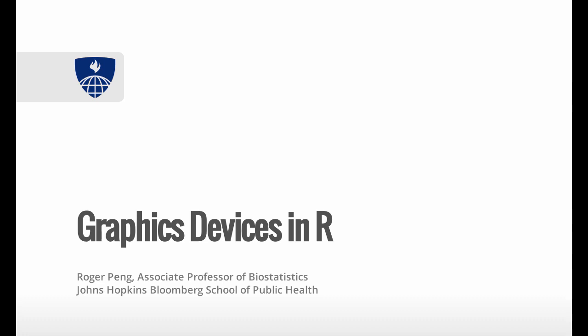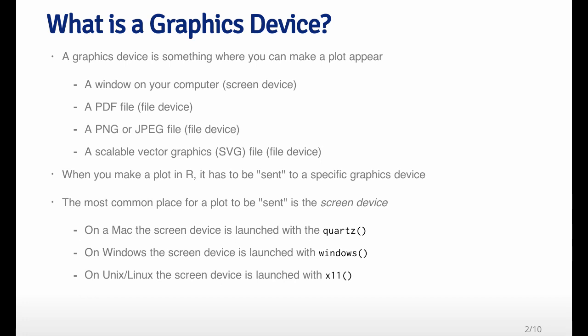Graphics devices in R are very important because we need them to make plots. There are many different types of graphics devices on which we can make plots, and so this lecture is going to cover briefly the various different graphics devices available to most users of R. A graphics device is something or some place where you can make a plot appear. The most obvious place is on your screen, or a window on your screen. When you open up R and call the plot function, a graphics window launches and your plot appears there. That's called the screen device.